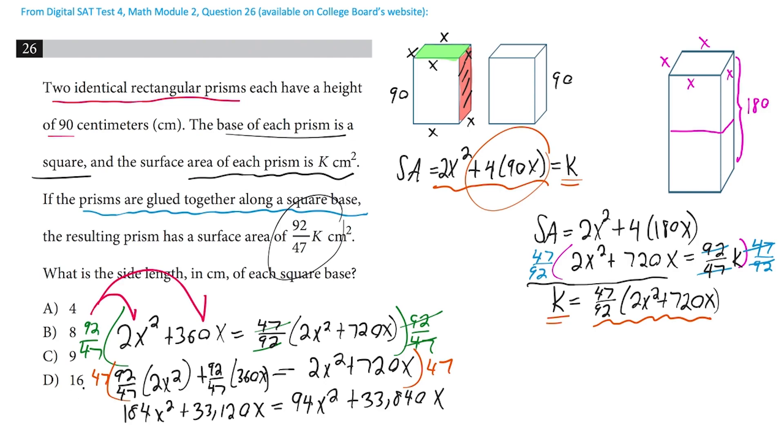And next, we can just go ahead and maybe get everything on one side for now. So take away 94x squared. Take away 33,840x. So take it away from both sides.